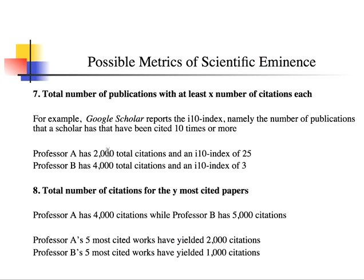Professor A may have 2,000 total citations and an I-10 index of 25, while Professor B might have 4,000 total citations but an I-10 index of only 3. That basically means Professor B probably had one publication that was a real home run receiving many citations. This shows how skewed the distribution of citations can be.